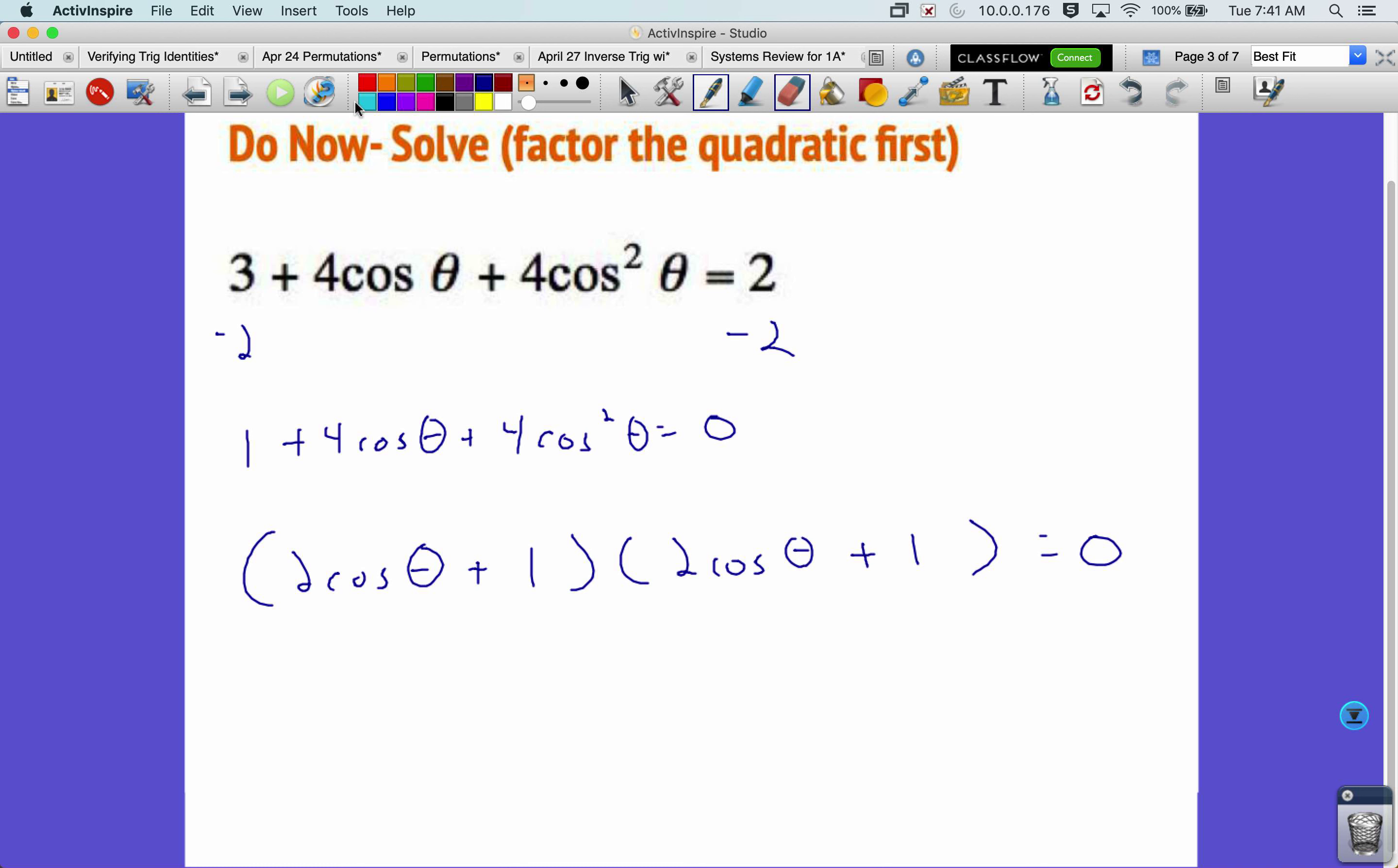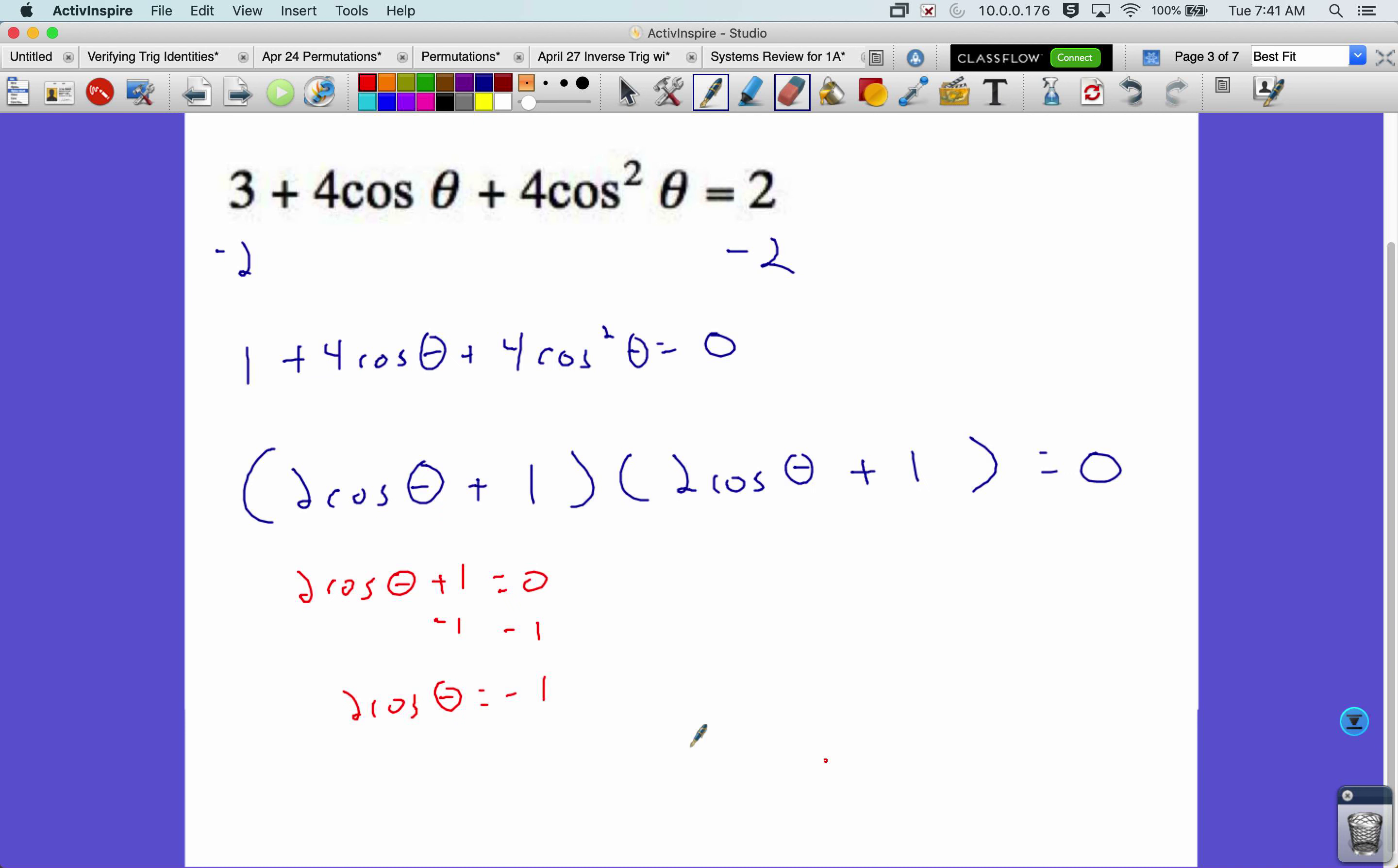All right, zero product property says that these both equal to zero, but they're the same. So I can just set one of them equal to zero. Two cosine theta plus one equals zero. And now solve for theta. So subtract one from both sides. Two cosine theta equals negative one. Divide both sides by two.